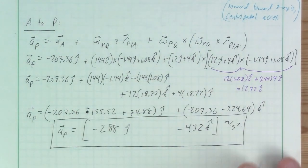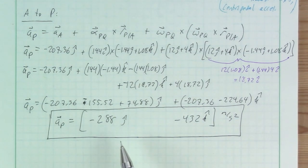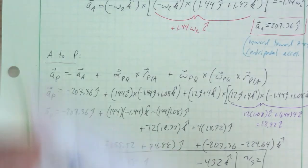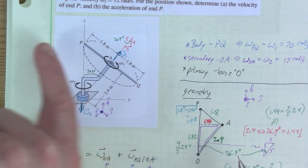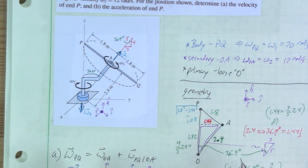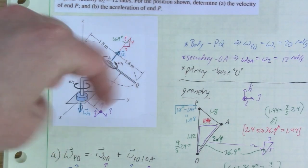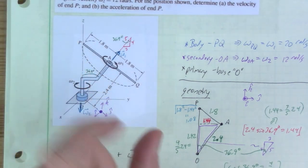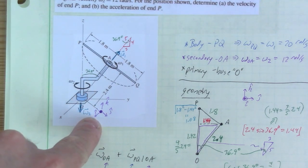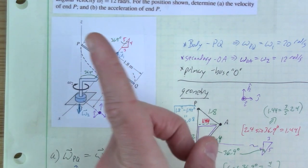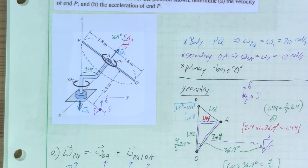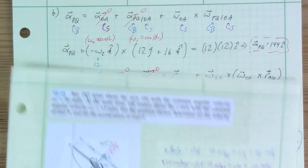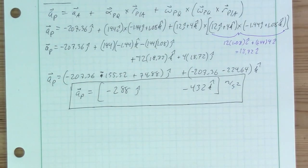The acceleration has a negative j-hat and negative k-hat component, which makes intuitive sense: as the system rotates, point P accelerates downward (negative k-hat) and inward in the negative j-hat direction. That wraps up kinematics. The next step is kinetics — the full dynamics of 3D motion — with about three lectures remaining on that topic.